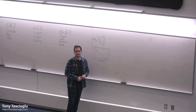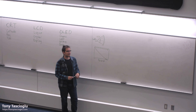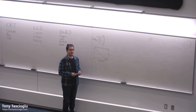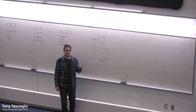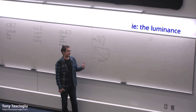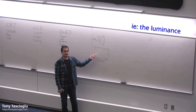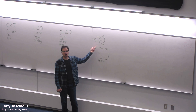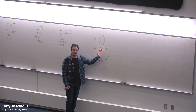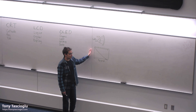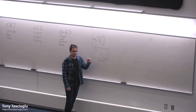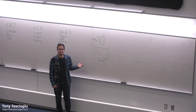CRTs reigned supreme until roughly the 2000s. They have some benefits that you would get with a modern technology like OLED. While the X and Y position is influenced by the electromagnets, the actual brightness of a dot is determined by how much power you're sending to the electron gun. So if the screen is supposed to be black, you're not sending any power at all, which means you get near pitch-black output — which you don't get with LCDs. You also get pretty much no motion blur.